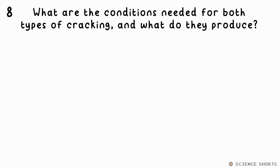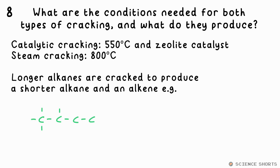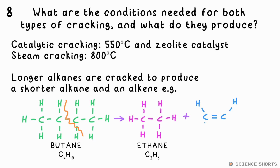What are the conditions needed for cracking, and what does the cracking of an alkane always produce? You need either a temperature of around 550°C and a zeolite catalyst for catalytic cracking, or just a higher temperature of more than 800°C for steam cracking. Cracking always produces a shorter alkane and an alkene — there aren't enough hydrogens to make two alkanes.